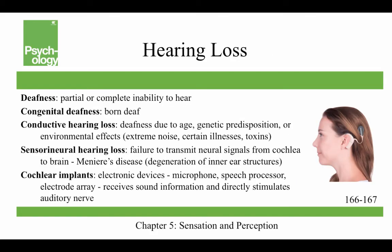Regarding hearing loss: deafness is a partial or complete inability to hear, and people born deaf have congenital deafness. Conductive hearing loss is deafness due to age, genetic predisposition, or environmental effects such as extreme noise, certain illnesses, or toxins. Sensorineural hearing loss is a failure to transmit neural signals from the cochlea to the brain. A way to restore hearing is through cochlear implants — electronic devices that include a microphone, a speech processor, and an electrode array, which receive sound information and directly stimulate the auditory nerve.